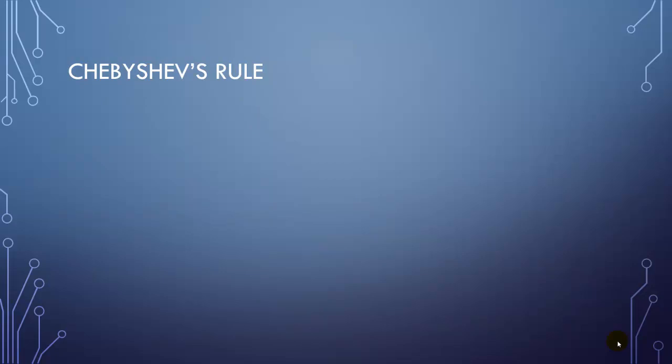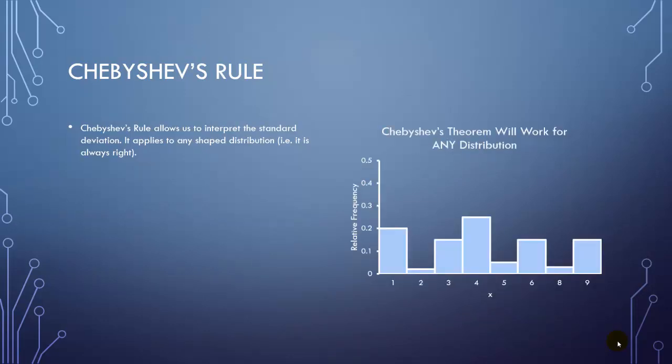So to explore interpreting the standard deviation and variance a little bit more, we have a theorem called Chebyshev's theorem or Chebyshev's rule. It allows us to interpret the standard deviation, and it applies to any shape distribution. So it's always going to be right. That doesn't mean it's always going to be useful, but it's always going to be right. So if the distribution is all crazy, it'll still work.